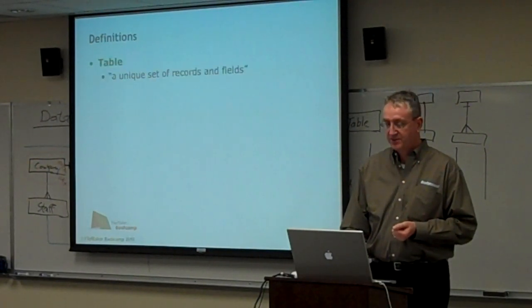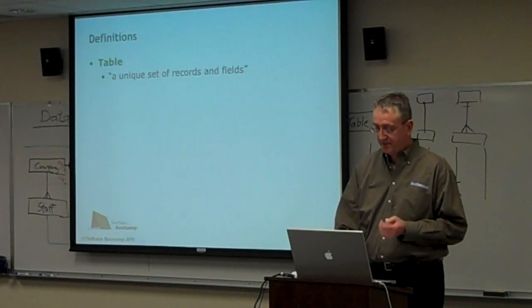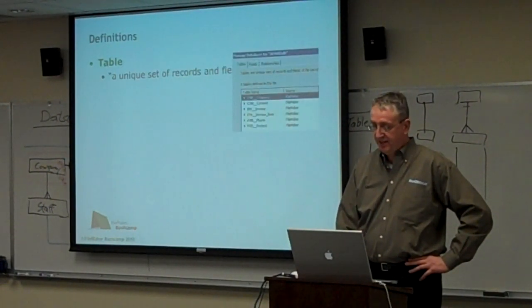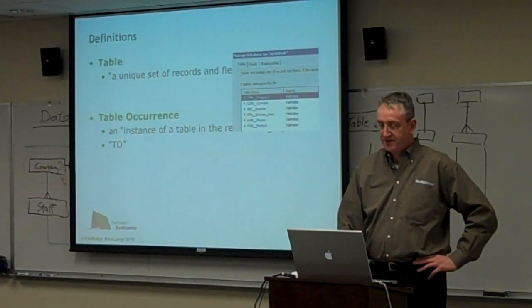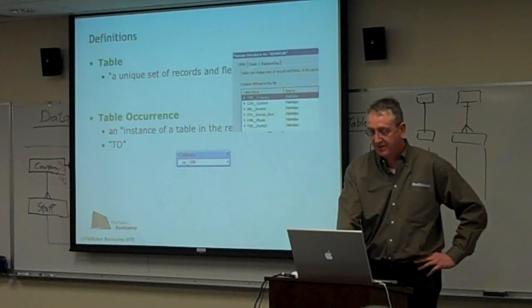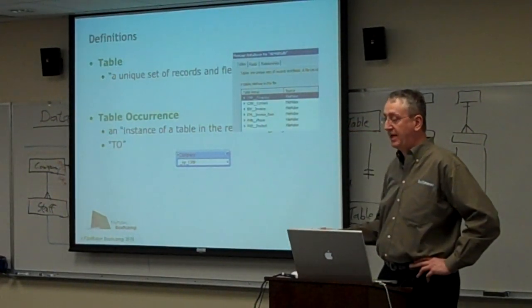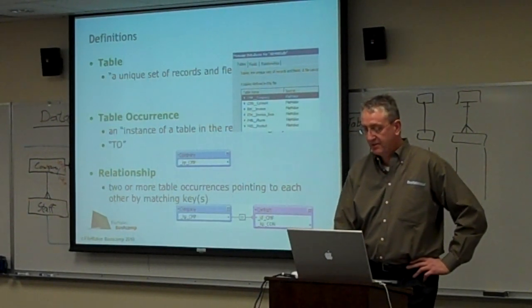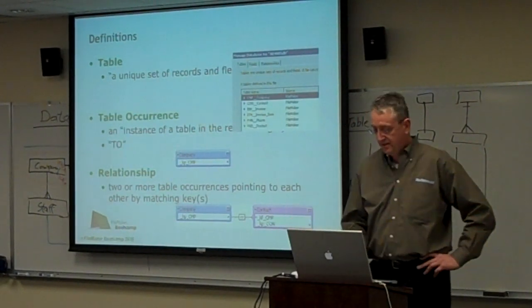So we're going to provide some definitions before we start. Really simple definitions built on data normalization, architecture, and data modeling. A table is a unique set of records and fields — that's the table tab in the defined database element in FileMaker. A table occurrence is an instance of a table in the relational graph, also known as a TO. A table occurrence and a table are not the same thing. In the graph, a table occurrence called 'company' is one instance of the table, but there might be multiple instances of the company table by different names in the graph. And a relationship is where two or more table occurrences point to each other.